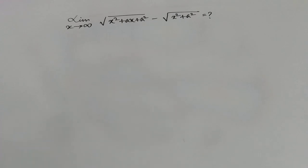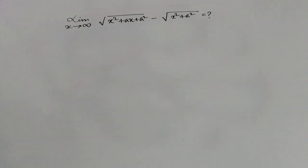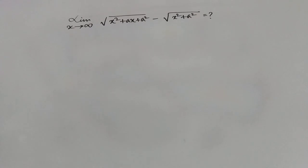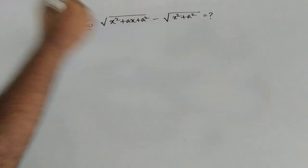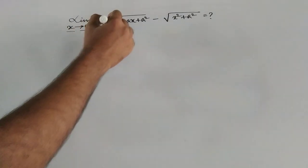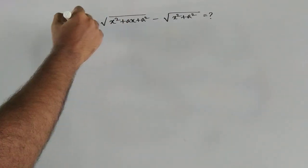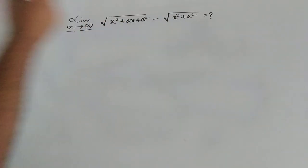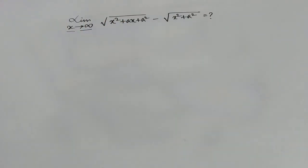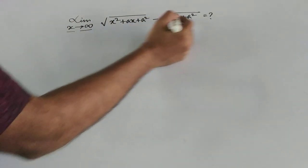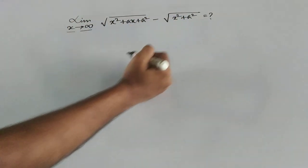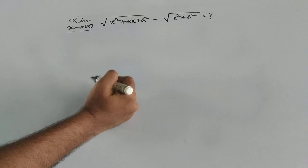Hi everyone. Today we are going to show a particular problem of calculus — a limit problem where x is a variable which tends to infinity. We have to find the value of: limit x tends to infinity of square root of (x² + ax + a²) minus square root of (x² + a²), equal to how much?